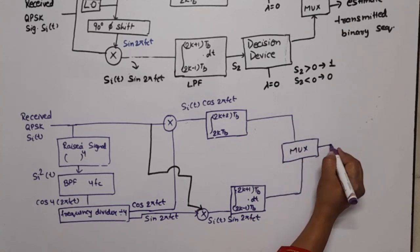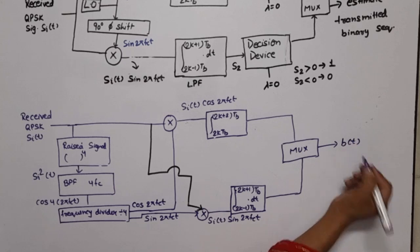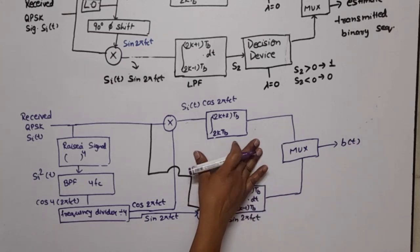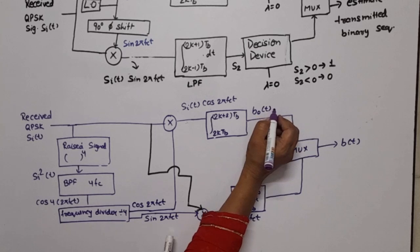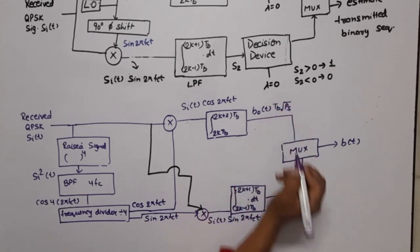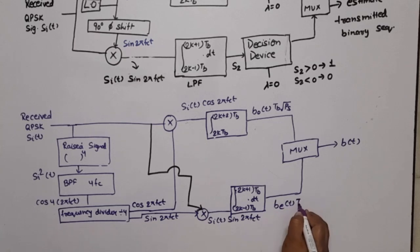The output of these low pass filters is applied to a multiplexer, and the output will be the binary sequence which was transmitted. The output of this low pass filter is the odd bit tb √ps, and the output of the other is the even bit tb √ps.